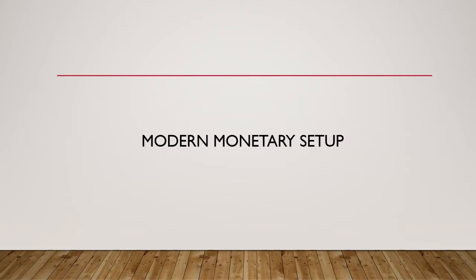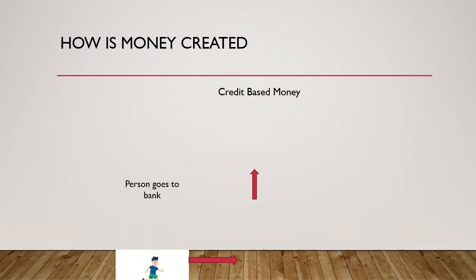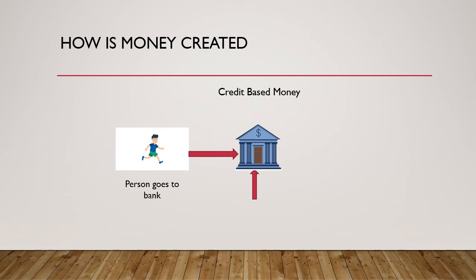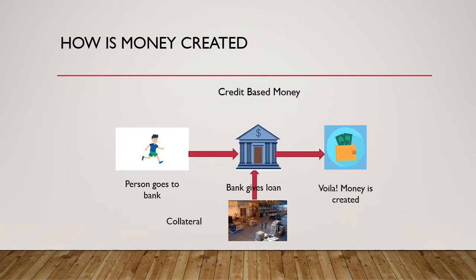Before we start, we will have a brief context of the modern monetary setup where we will discuss how money is created and grows in the economy. Under this system, a person goes to the bank to get some loan. The bank takes from the person a collateral which can be an asset or inventory, and in lieu of that the bank grants him a loan. And voila, money is created in the economy because in this system, credit is money.